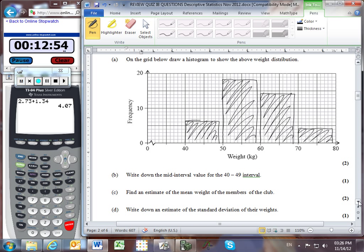Part B asks for the mid-interval value for the 40 to 49 interval. To find the midpoint, 40 plus 49 divided by 2 gives us 44.5 as the mid-interval value.